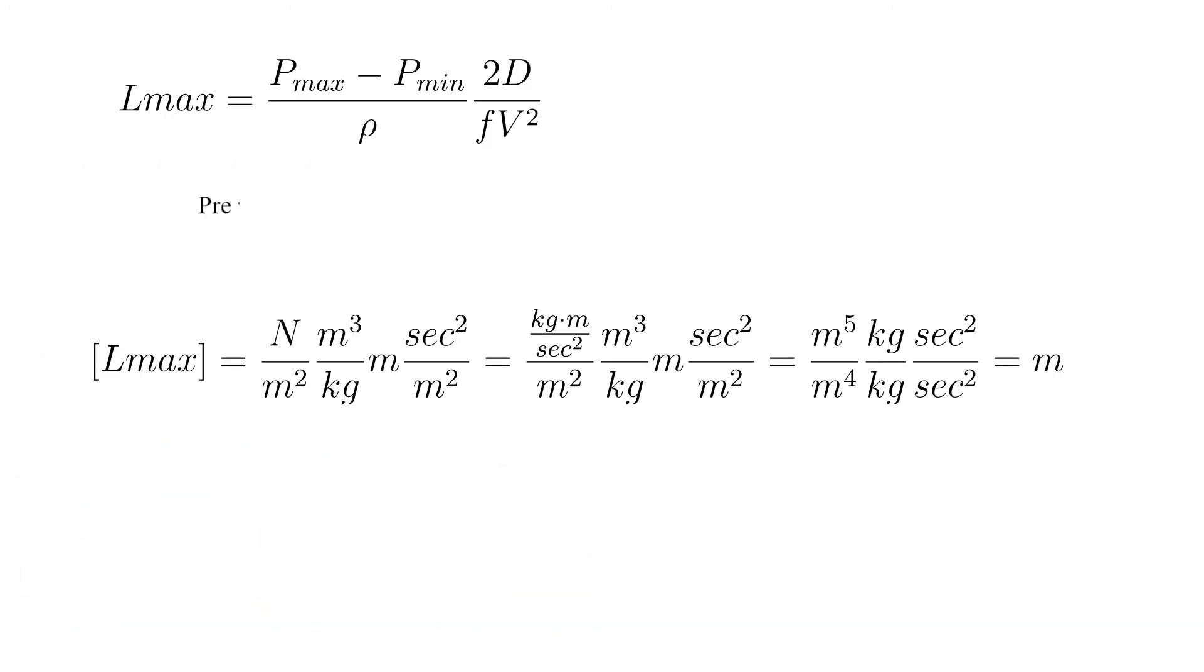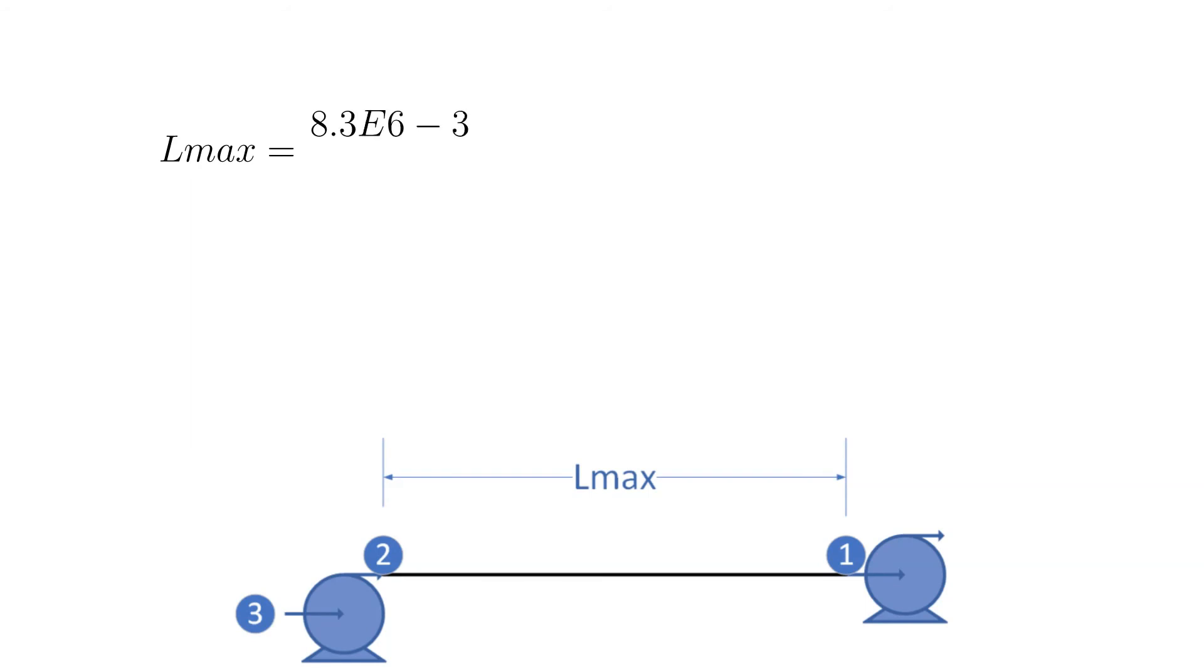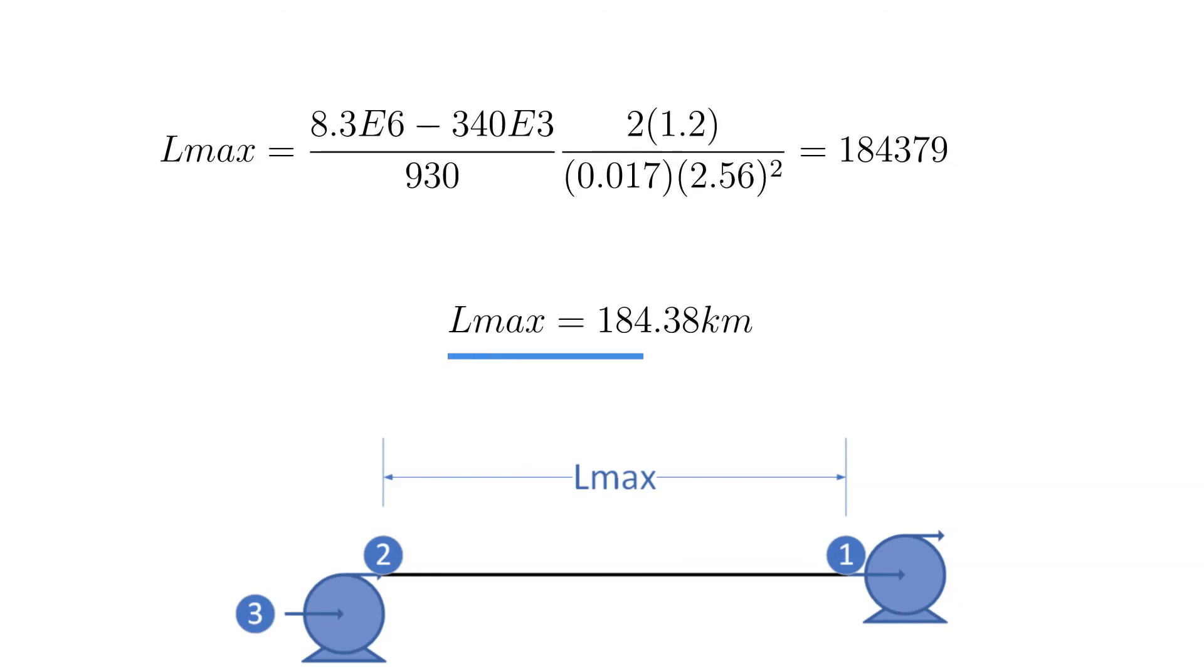Before we crunch numbers, let's do a unit check. We expect and want the result to be in meters. The check is shown below. The units for each term are labeled. This looks good. Now that we know our units will come out okay, let's crunch the numbers. The maximum length is 184.38 kilometers.